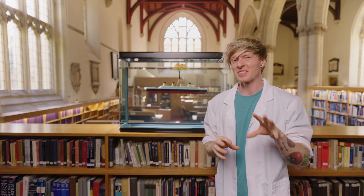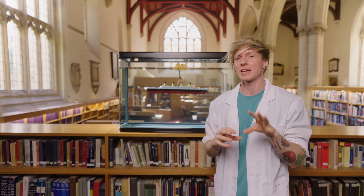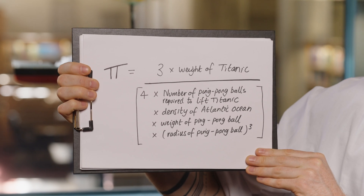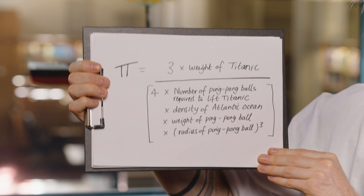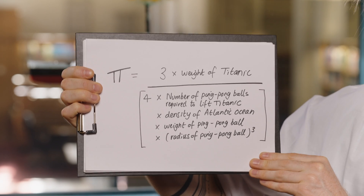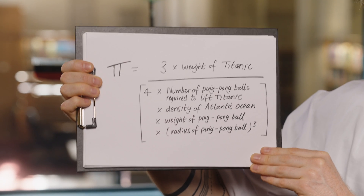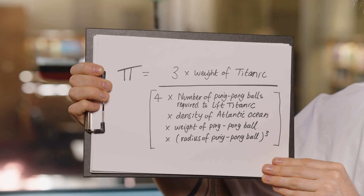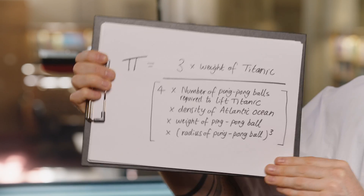Not only have we raised the Titanic with ping pong balls, but when we calculated the buoyancy force, the number pi appeared in our calculation when working out the volume of a sphere. Rearranging gives us our second alternative definition: pi equals 3 times the weight of the Titanic divided by 4 times the number of ping pong balls required to lift it, times the density of the Atlantic Ocean, times the weight of a ping pong ball, times the radius of a ping pong ball cubed.